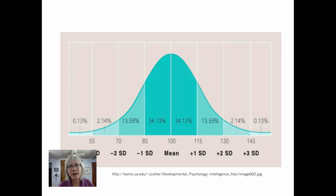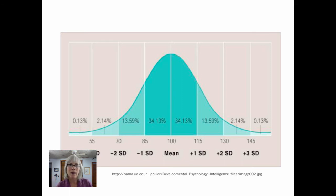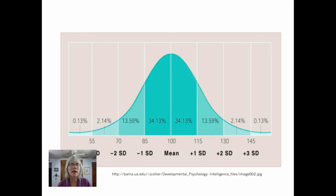Part of what we're going to be thinking about with an intelligence test is how does this child or adult perform relative to everyone else? 100 is average. The further to the right on this bell curve that we go, the greater or the brighter this child or adult is. Conversely, further out to the left, we're seeing people who are performing below average, at least on this measure of intelligence.